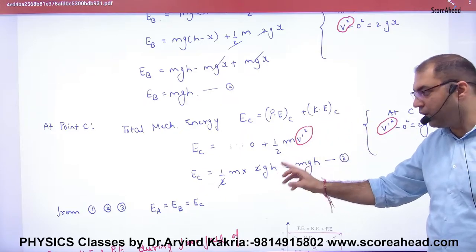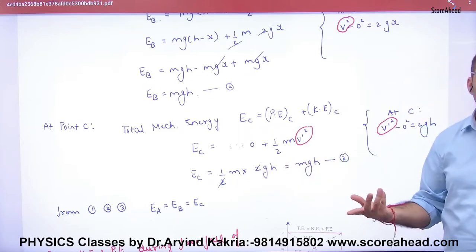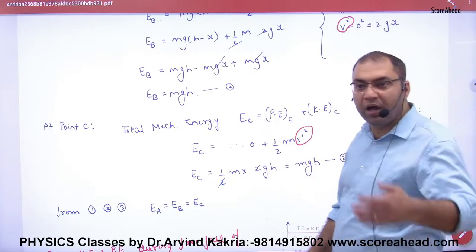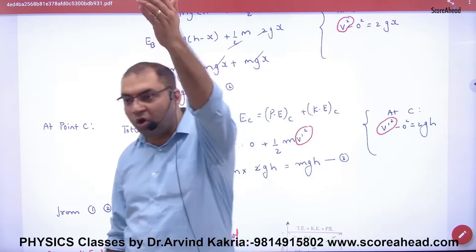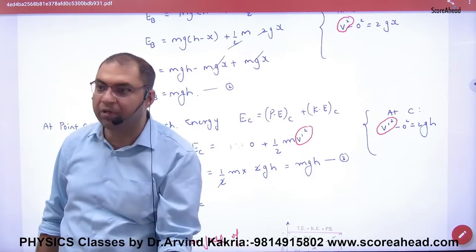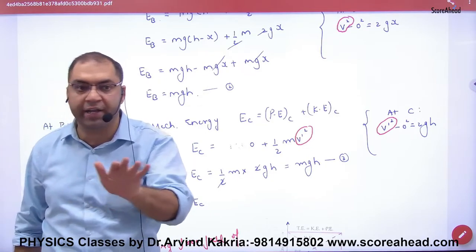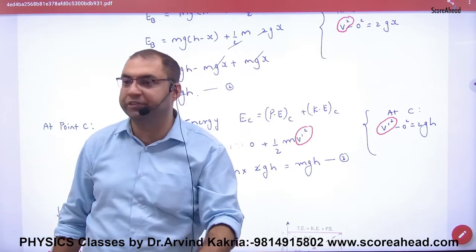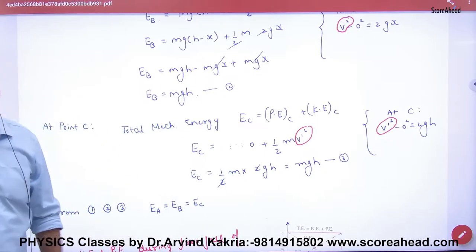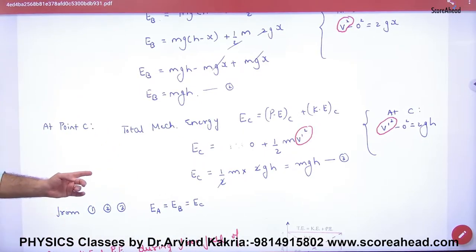Put V'² here: 2gh divided by 2 cancels, answer is mgh. So at any point in the air, top or bottom, total energy sum is mgh. This proves that sum of kinetic and potential will remain constant. Is this proof clear?